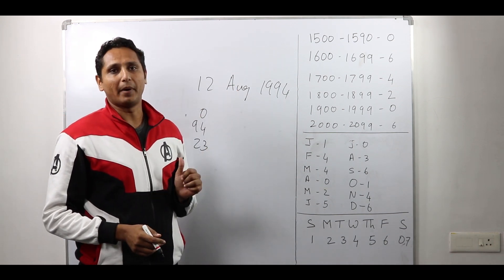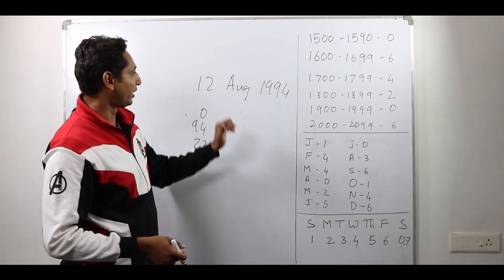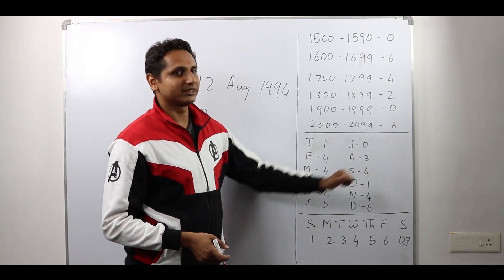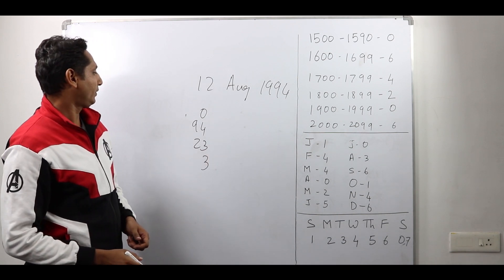Next is the month. Here I have some codes for the months. August, the code for August is 3. I write 3 here.